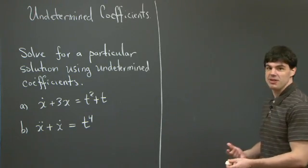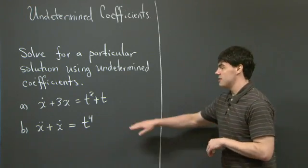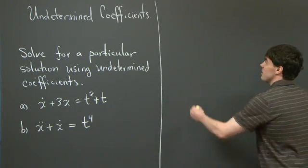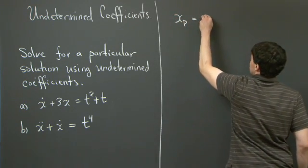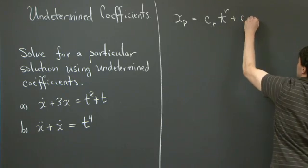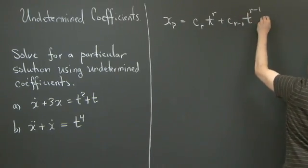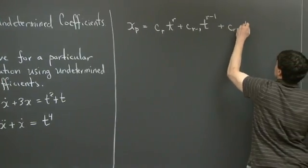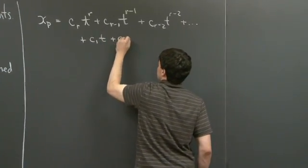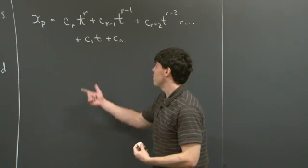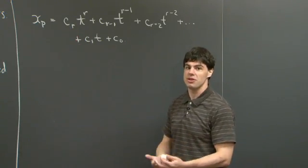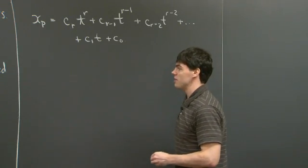We're asked to solve this problem using the method of undetermined coefficients. The key observation is: if we have a differential equation with constant coefficients and a polynomial forcing on the right-hand side, then there's always going to be a particular solution which is a polynomial of the form c_r t^r + c_{r-1} t^{r-1} + ... + c_1 t + c_0. These constants c are sometimes referred to as the undetermined coefficients, and these are the constants that we seek to solve.